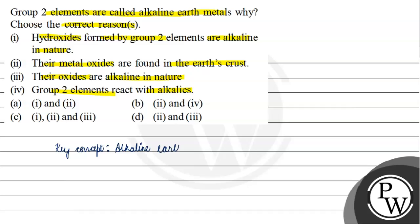Alkaline earth metals - this is the name given because the oxides and hydroxides are alkaline in nature, and the oxides are found in earth's crust.